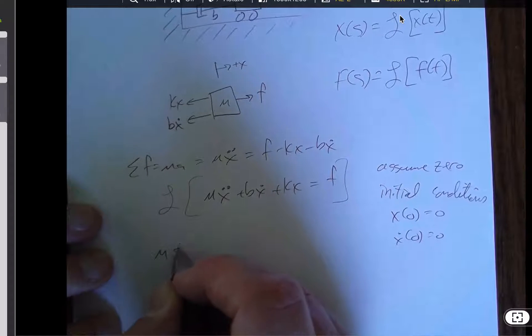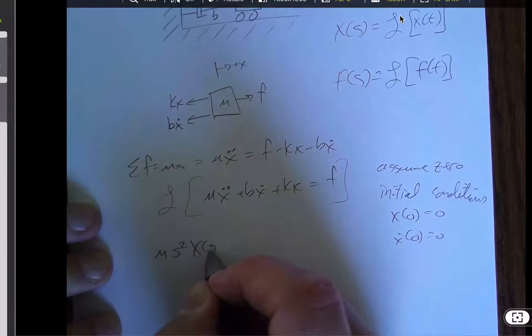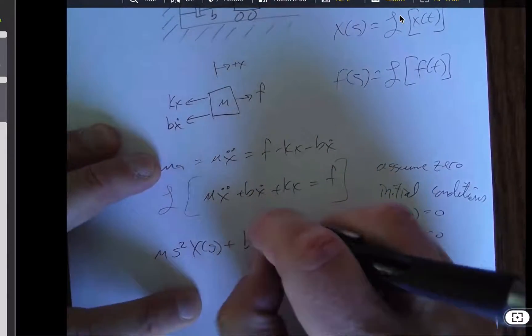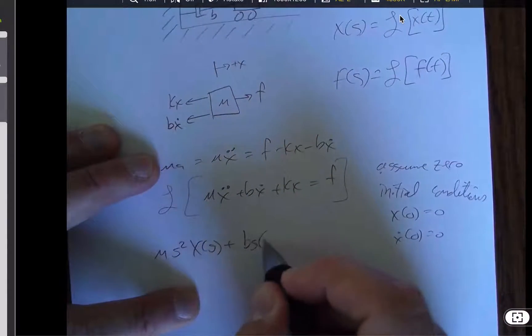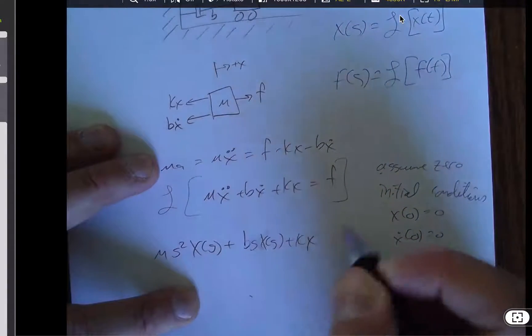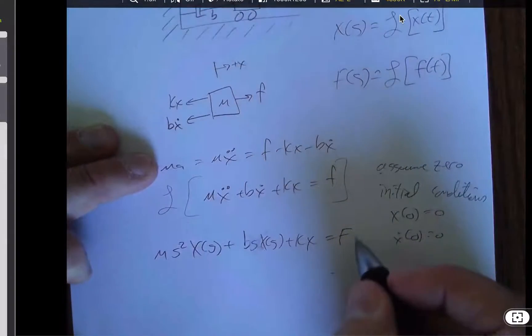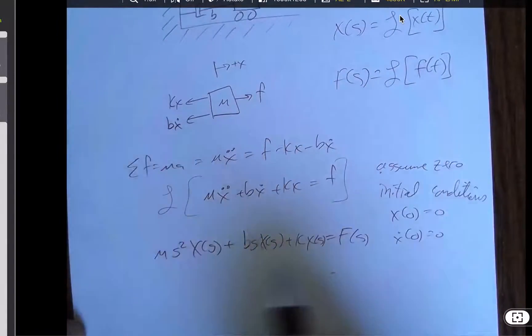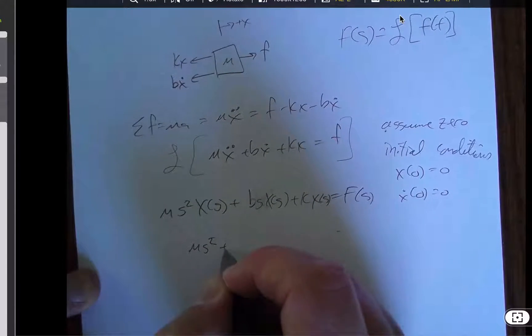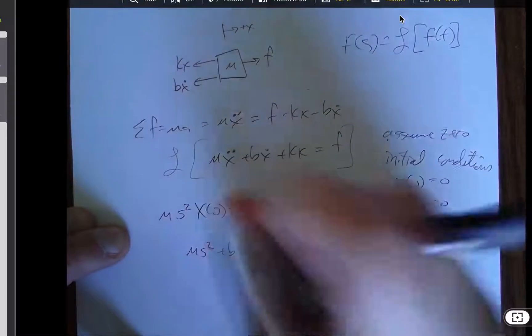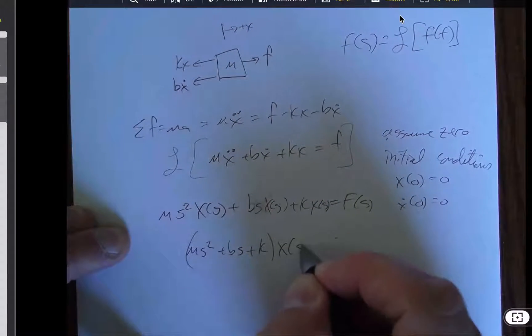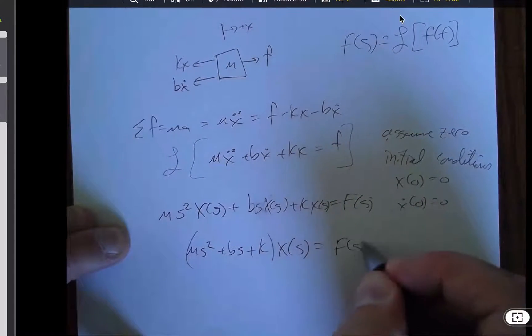And so we end up with ms squared x of s plus bs x of s. Ah, sorry. Plus kx is equal to capital F of s. And there's another of s here. So I can collect my x terms and I get ms squared plus bs plus k times x of s is equal to F of s.